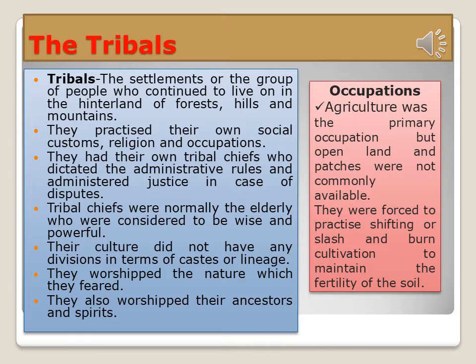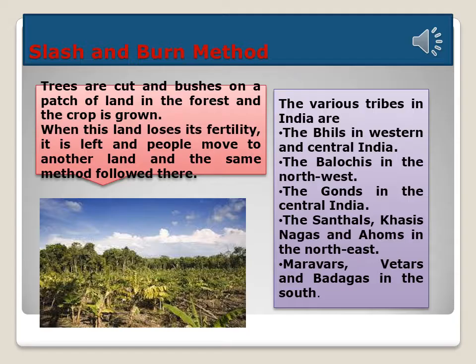Agriculture was the primary occupation of tribals, but open land and patches were not commonly available. They were forced to practice shifting, or slash and burn, cultivation to maintain soil fertility. In this method, trees are cut and bushes on a patch of forest land are cleared, and crops are grown. When this land loses its fertility, it is left and people move to another patch of land, following the same method there.